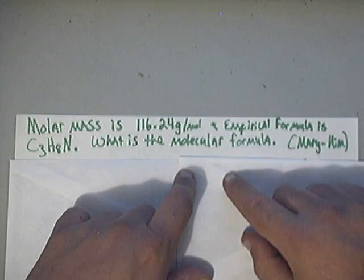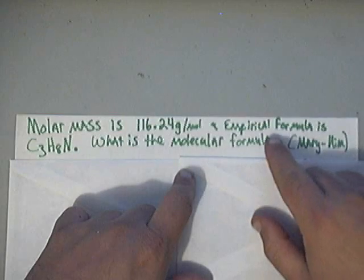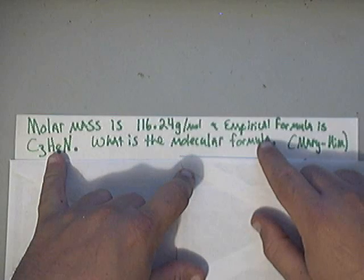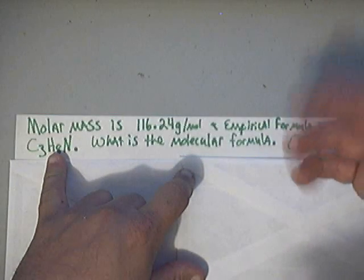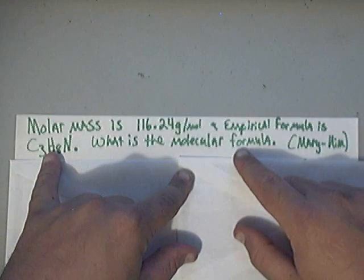Well, let's make sure you understand one thing. An empirical formula is basically the completely reduced form of the compound that you're looking at. And the molecular formula can be multiples of the empirical formula.